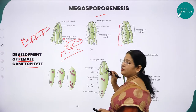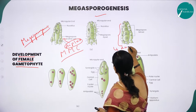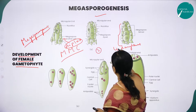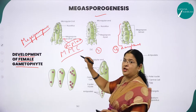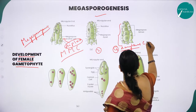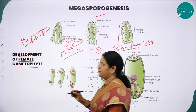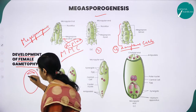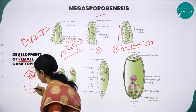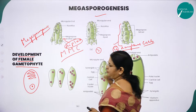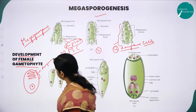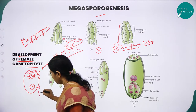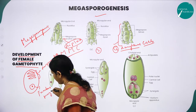The megaspore mother cell, which is a diploid cell, undergoes meiotic division to form four daughter cells. Among these four daughter cells, three cells will degenerate and become non-functional. Only one megaspore will be functional — this is called the functional megaspore.